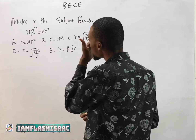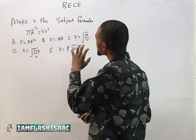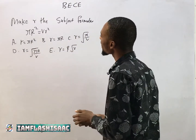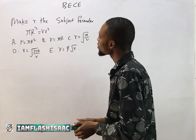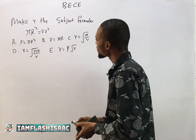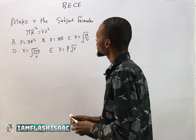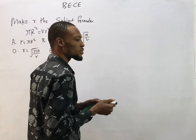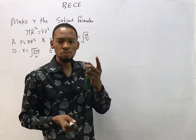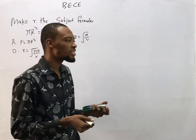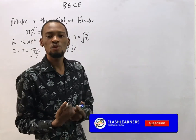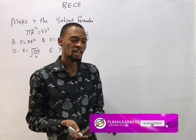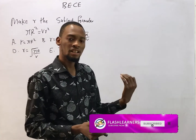This question says make r the subject formula in πr² = VR². Change of subject formula is a single variable in an equation which other things are equal to, and it's usually at the left.